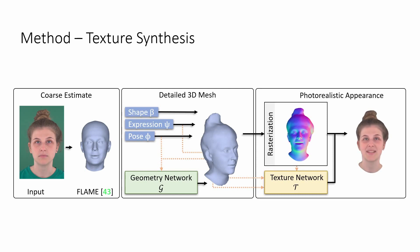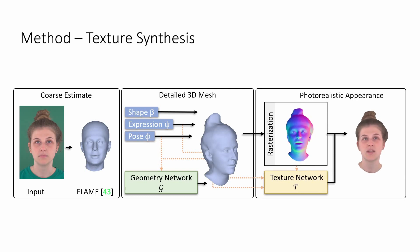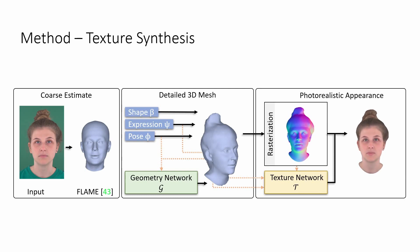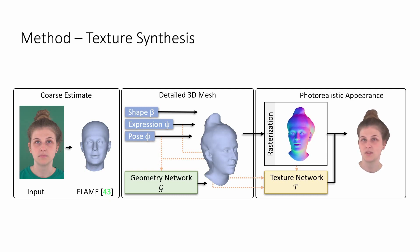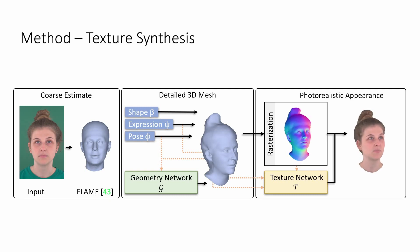A second feedforward network T synthesizes the appearance of the avatar by predicting a photorealistic texture. Similarly to G, T is conditioned on the pose, but also on the expression and patches of surface normals. This enables view and expression dependent effects and allows to plausibly synthesize the inner mouth region, for which no explicit geometry can be reconstructed.